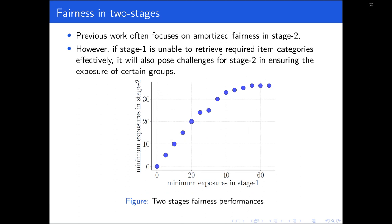Previous work often focused on amortized fairness needs in stage two. However, if stage one is unable to retrieve required item categories effectively, it will also pose challenges for stage two in ensuring the exposure of certain groups, as shown in this figure.